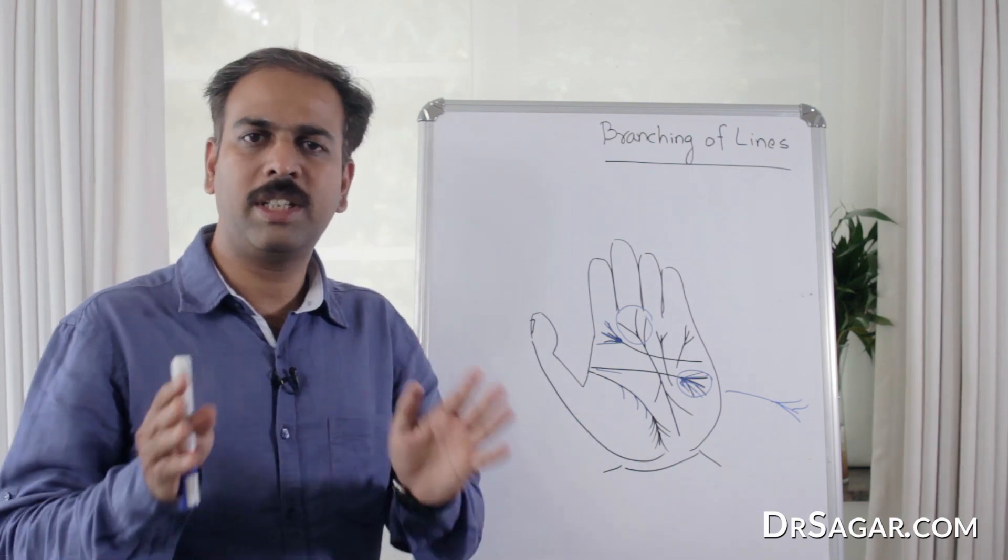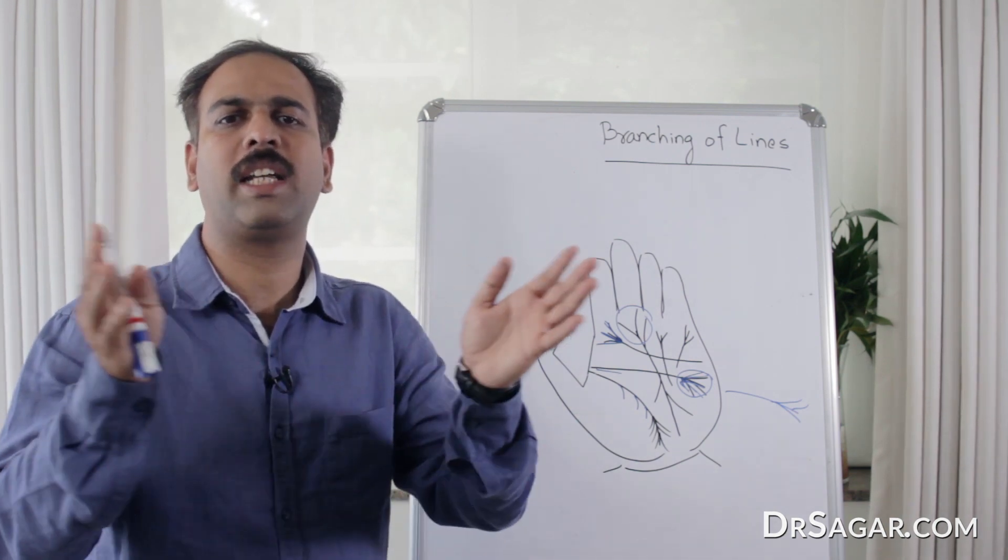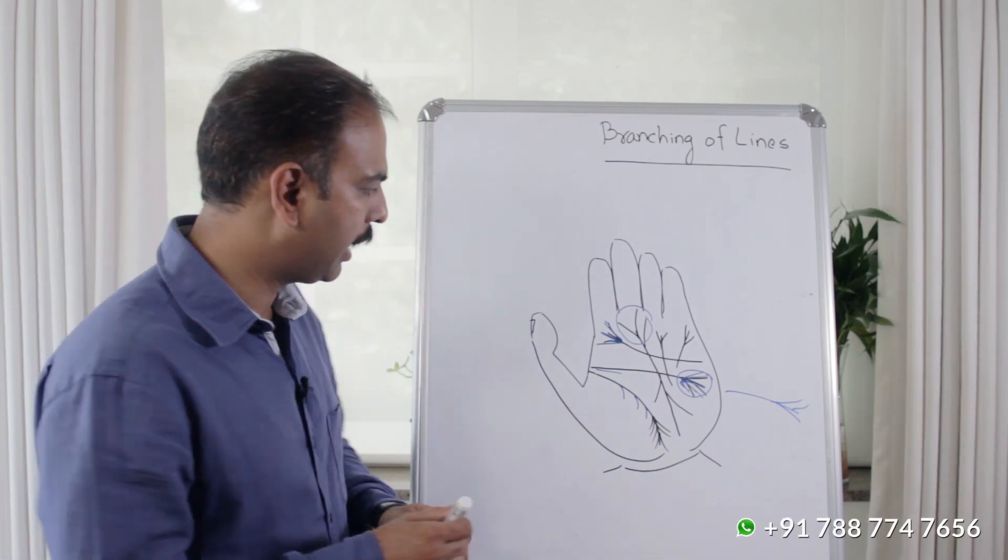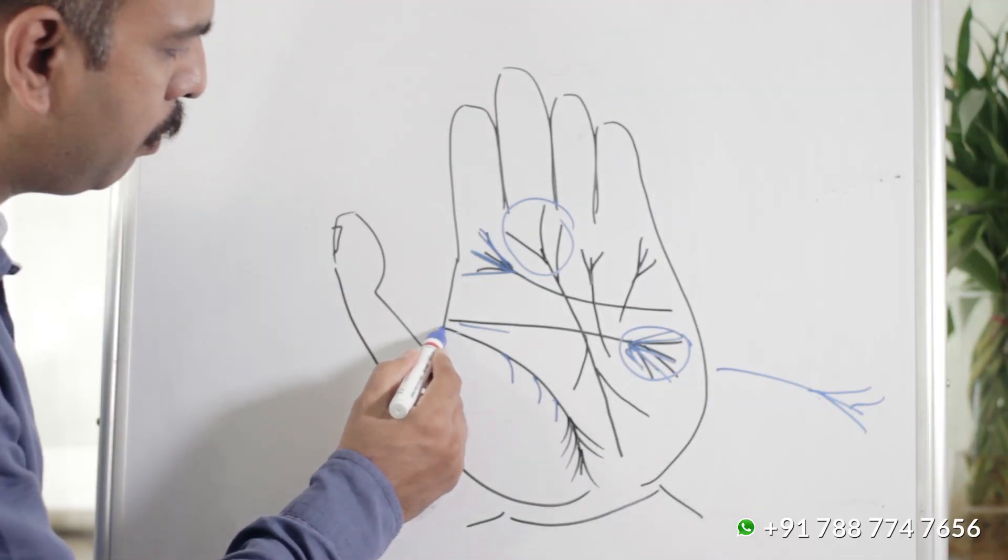If there are many lines branching upward at the end, this is positive for the life line. If the life line is very strong and very deep,